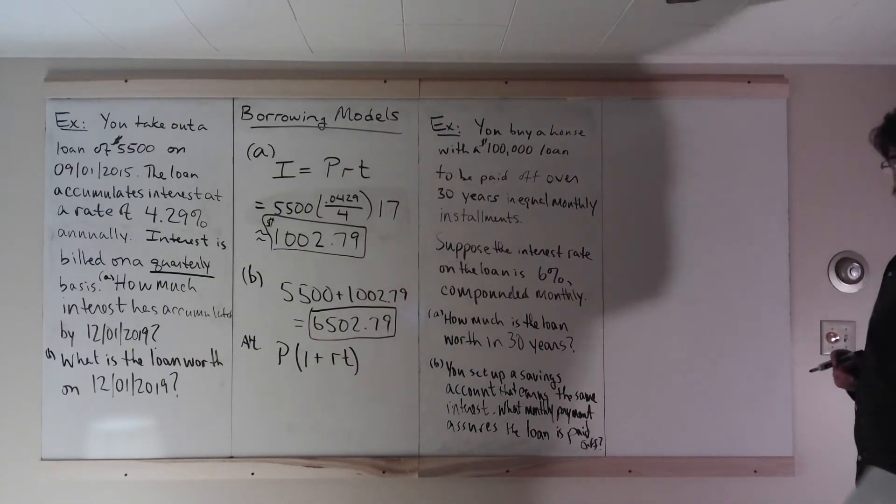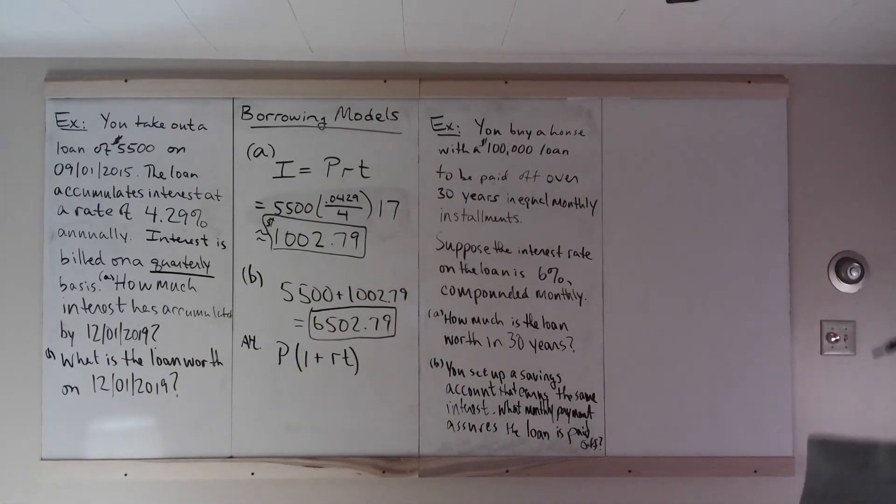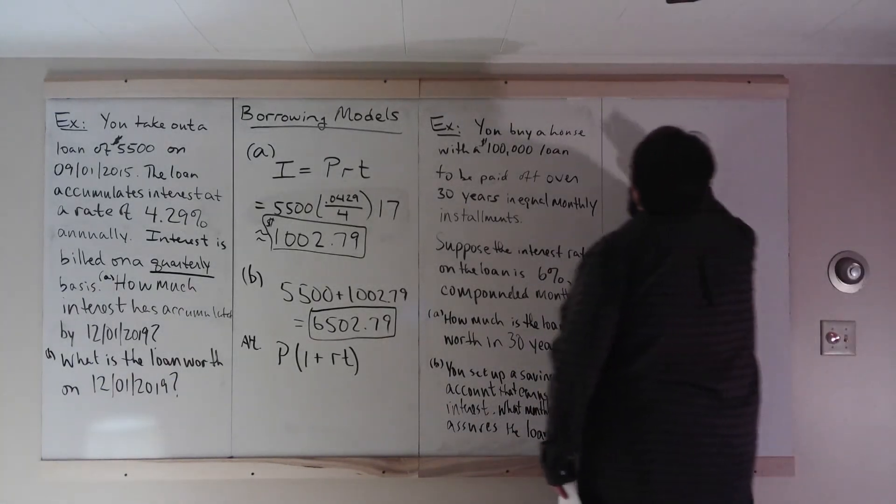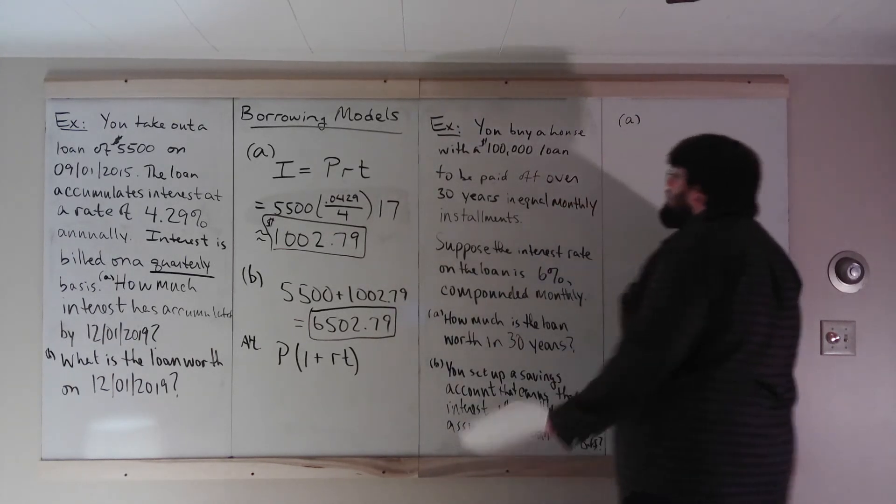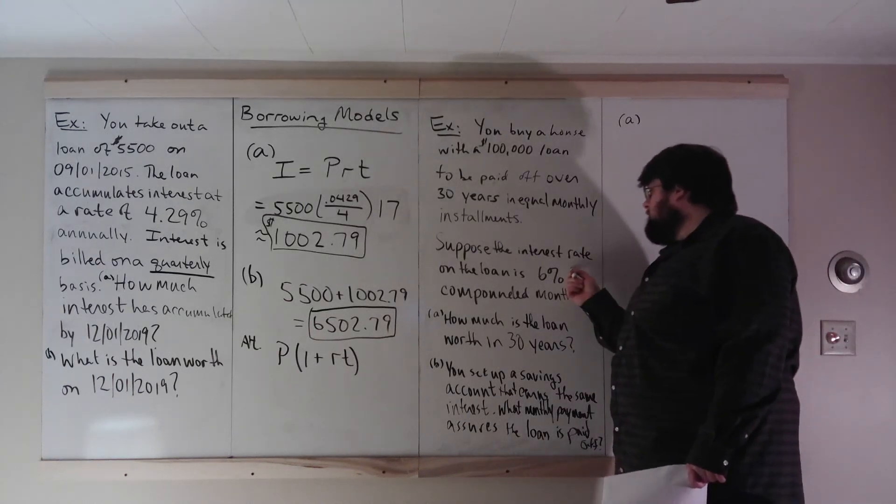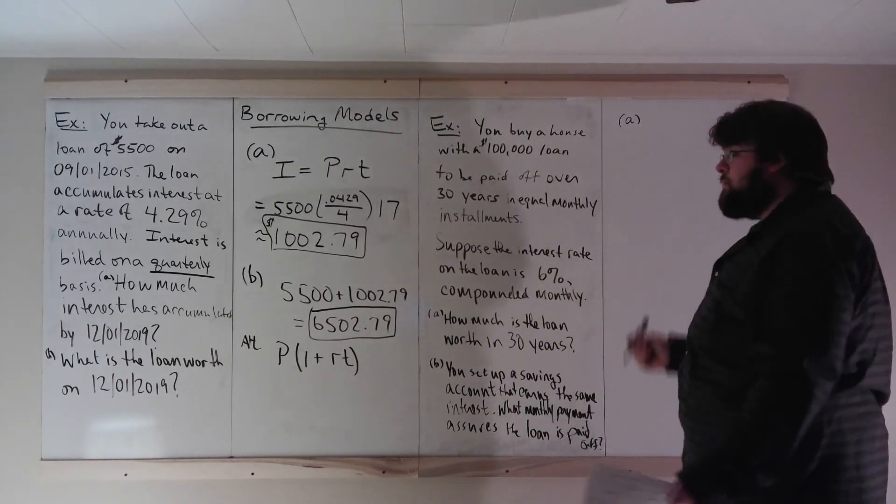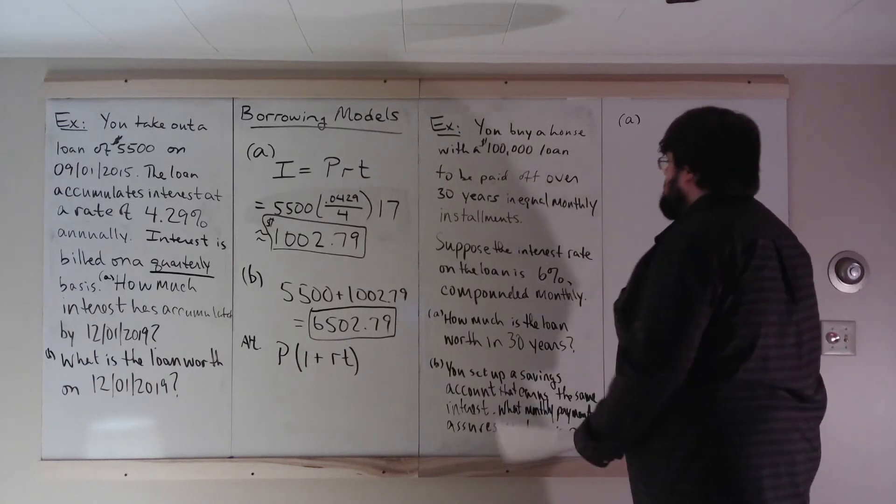Now let's look at this next one. This next one actually combines a borrowing observation with a savings observation. You buy a house with a $100,000 loan to be paid off over 30 years in equal monthly installments. Suppose the interest rate is 6% compounded monthly. Part A, how much is the loan worth in 30 years? Well, here, again, you could do an interest and then the actual computation. Interest here, notice, it accumulates interest 6% compounded monthly.